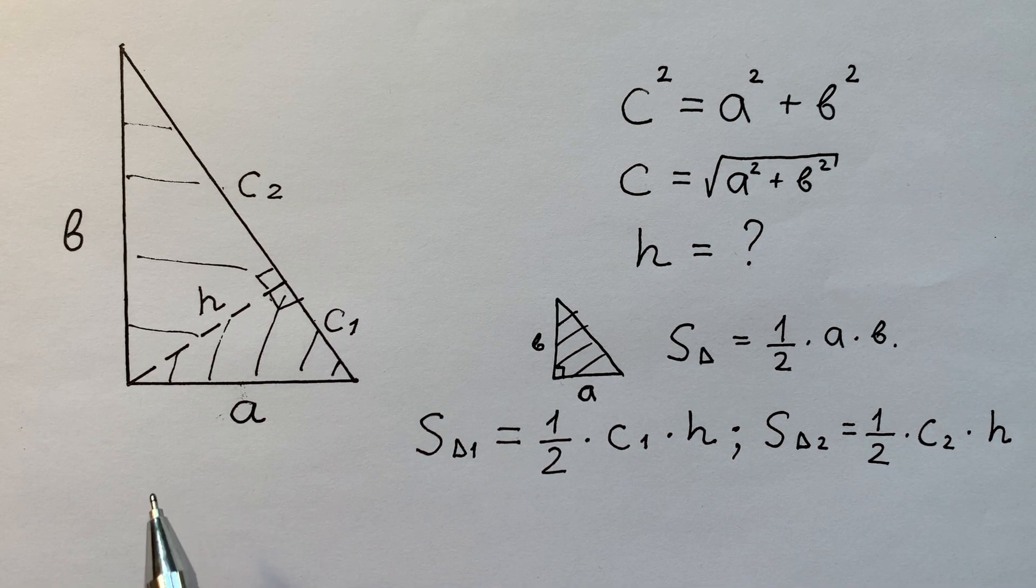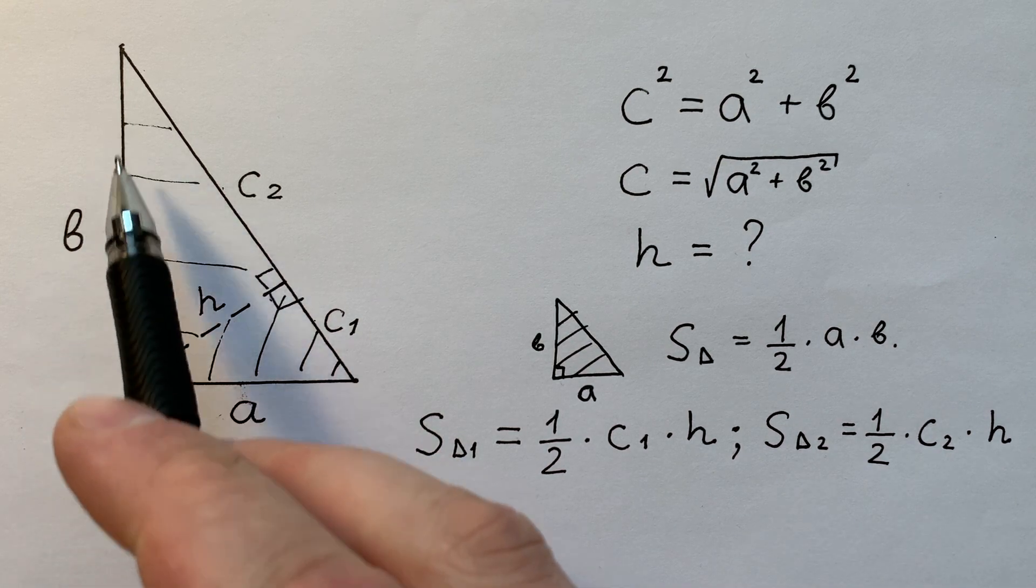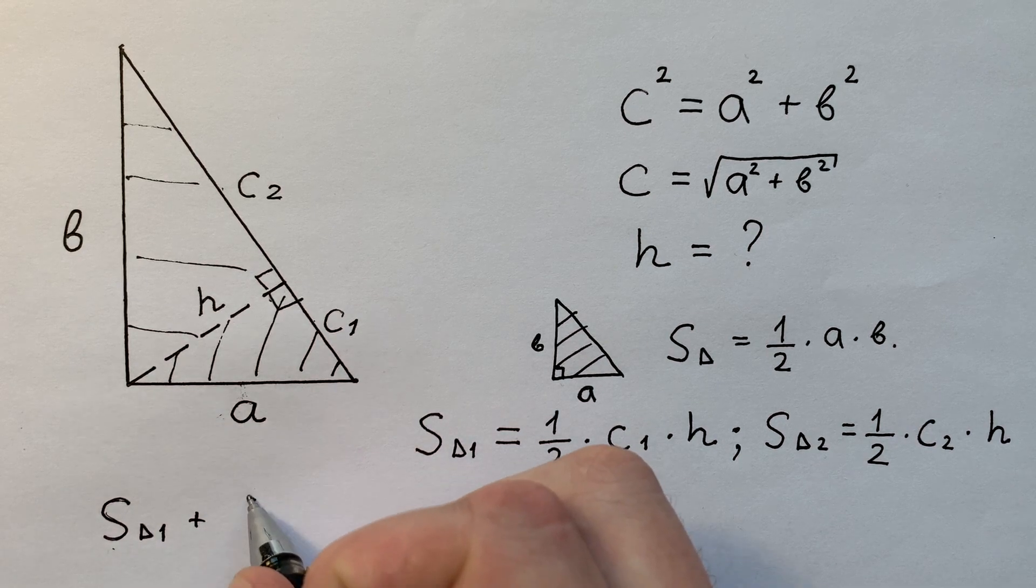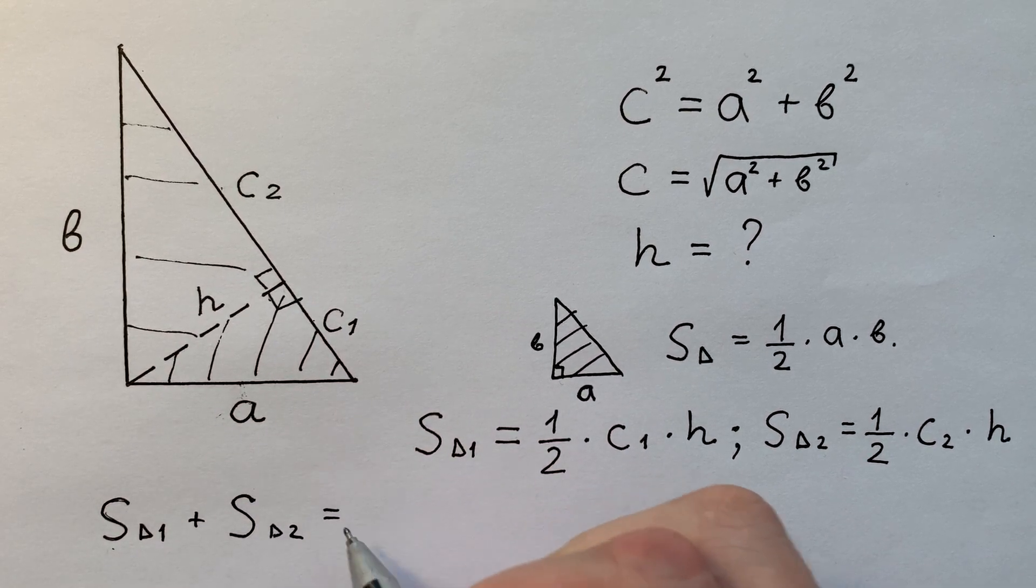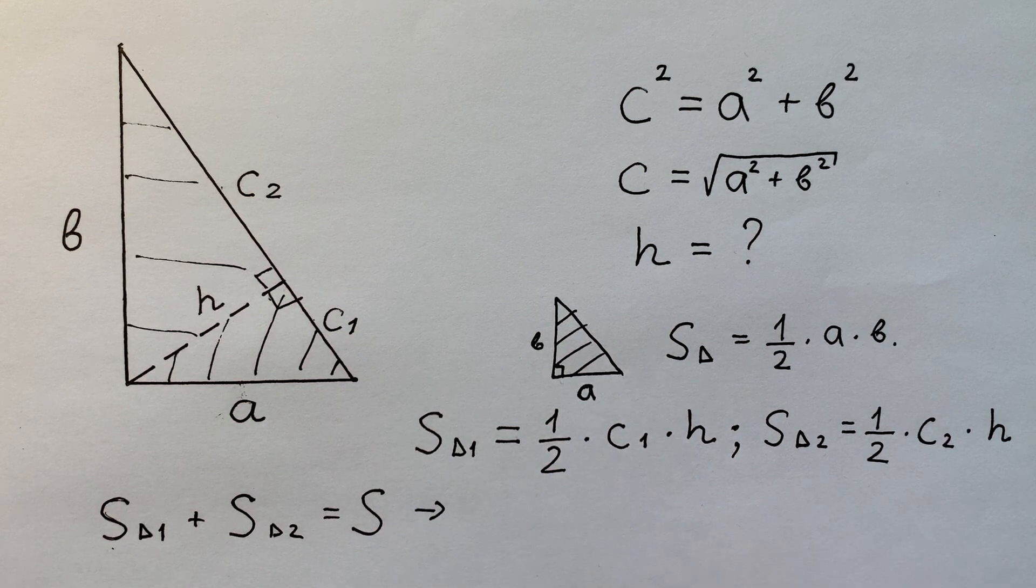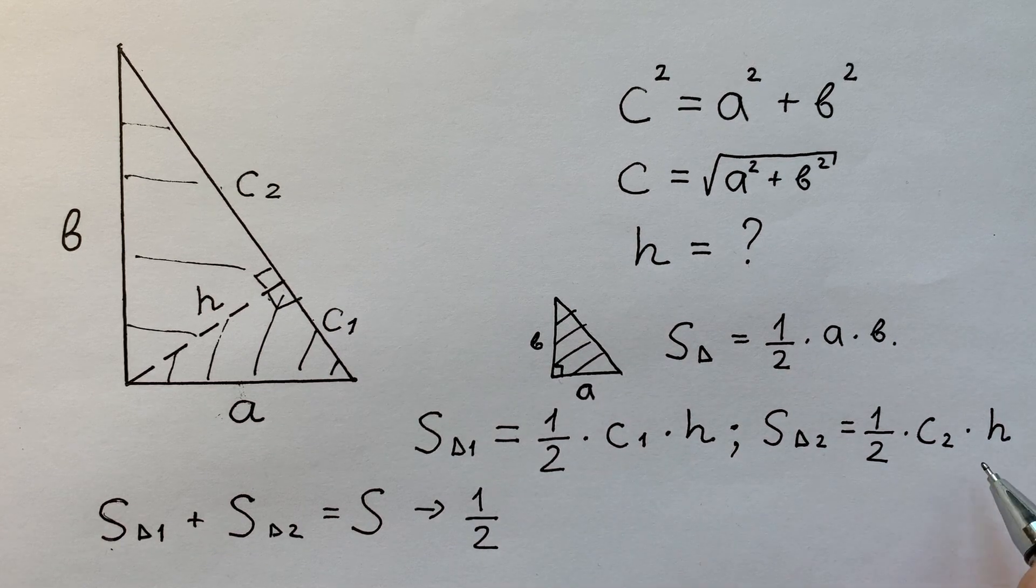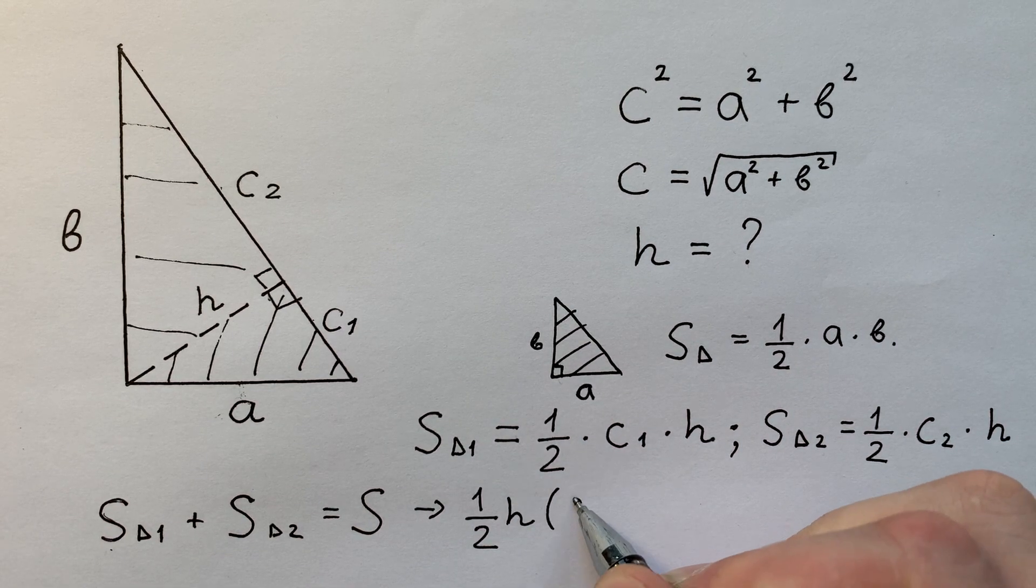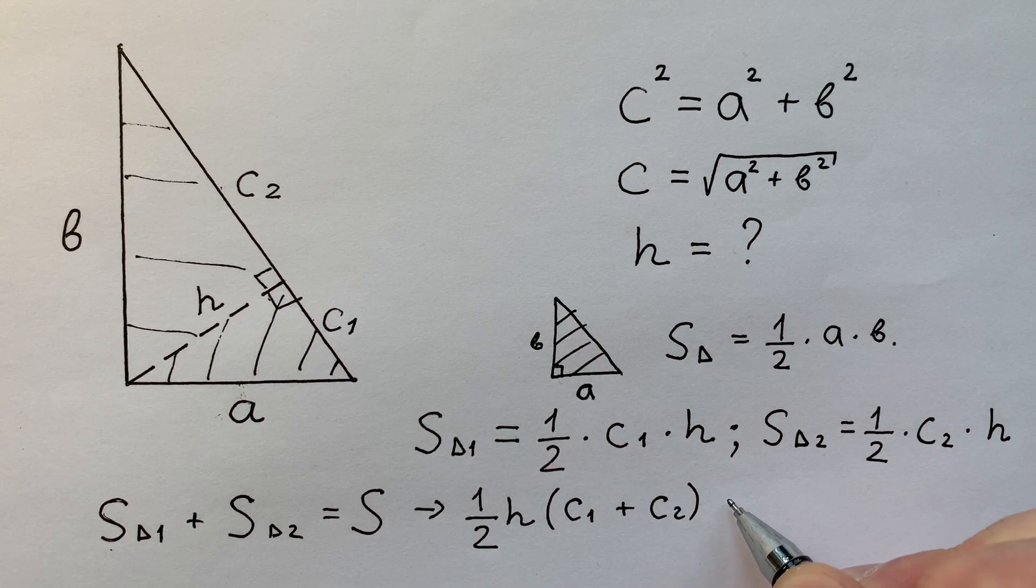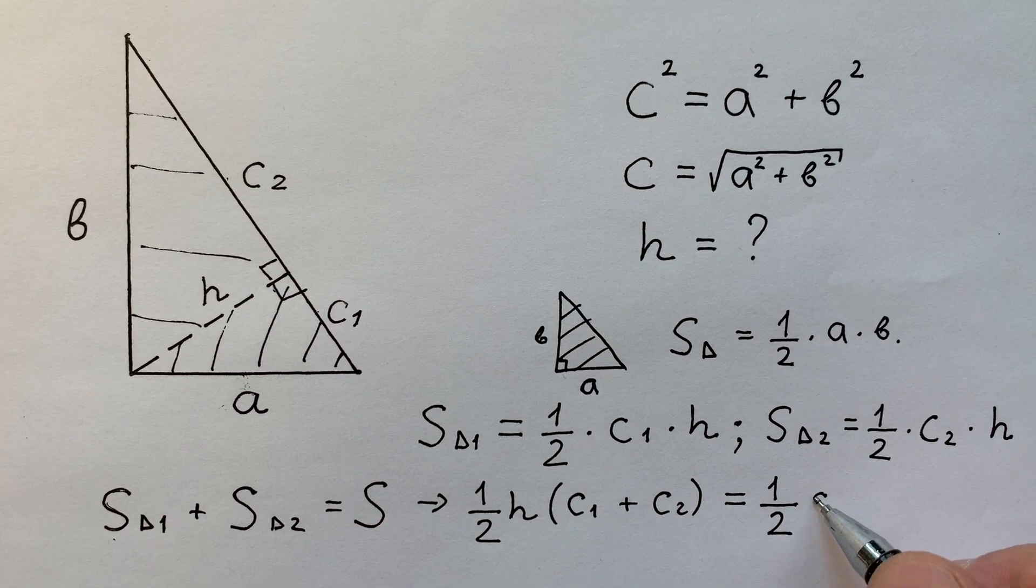And of course we know that the sum of these areas equals the full area. First area plus second area equals full area. So we can write that one divided by two times H is common. C1 plus C2 equals 1 divided by 2 times AB.